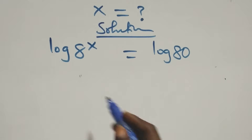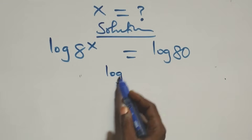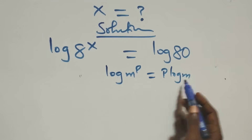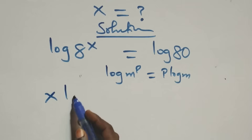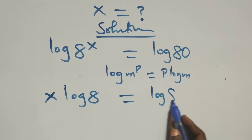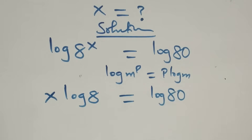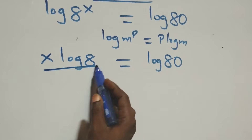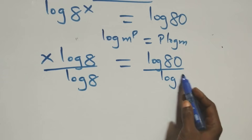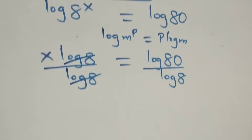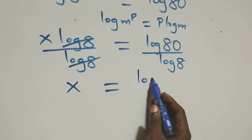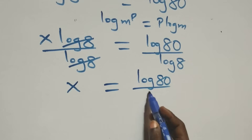The next step: we apply the power law of logarithm. When we have log m raised to power p, this is the same as p·log m. So we have x·log 8 equals log 80. Then we divide both sides by log 8, and log 8 cancels, leaving x equals log 80 over log 8.